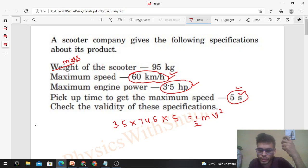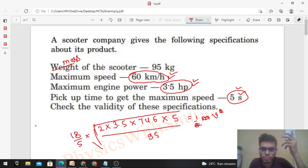From here you have to find out the value of v, v max. So take 2 to the other side, m to the denominator. m is given 95, and take the root of this. This will give you the maximum speed the scooter can attain with this power of engine. This will be in meter per second, so you have to multiply it with 18 by 5 to convert it to kilometer per hour. If this value is less than 60 kilometer per hour, then you can say the specifications are overrated.